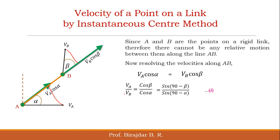Now we draw a perpendicular line to the velocity of A and another perpendicular line to the velocity of B. These two perpendiculars will meet at a point, which we consider the instantaneous center I. The meaning is that the link AB rotates about this instantaneous center.